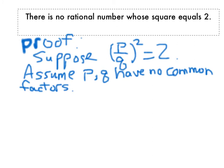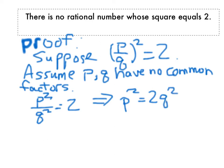So we have p over q squared equals 2. We can, of course, say that p squared over q squared equals 2, which implies that p squared is 2 times q squared. Now what that says is that p squared is an even number, because it's 2 times something.